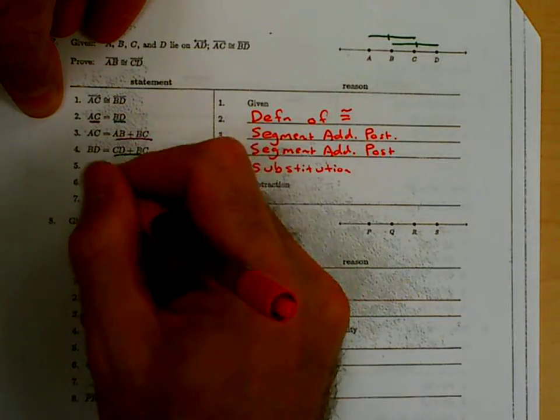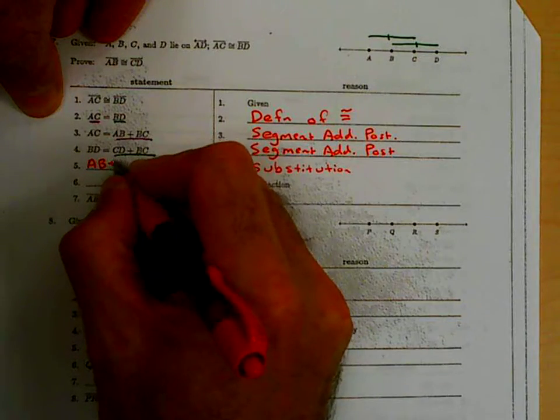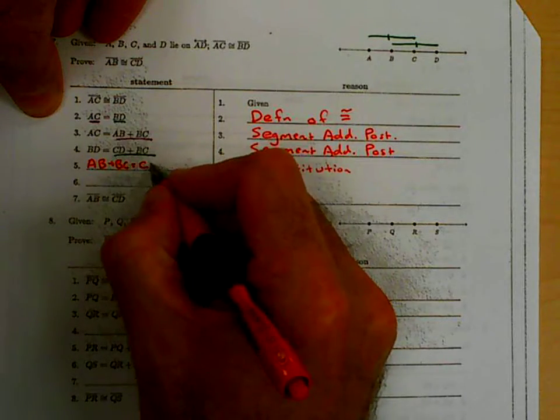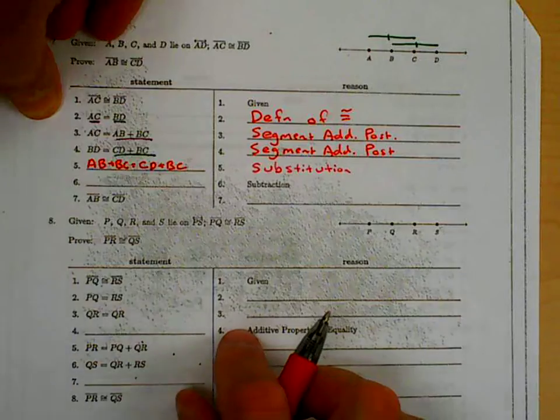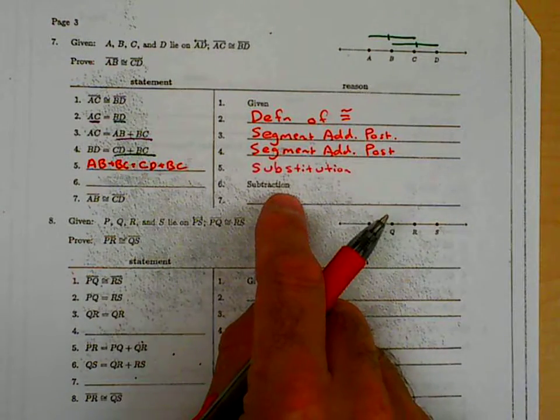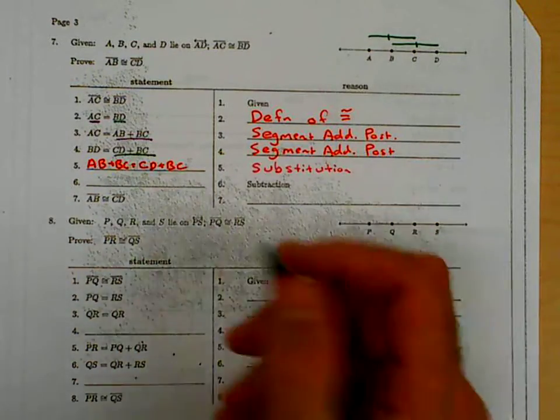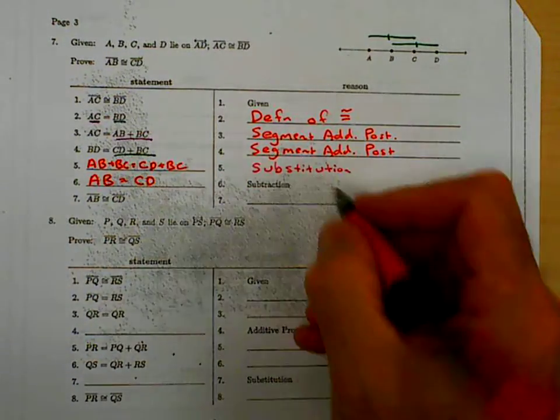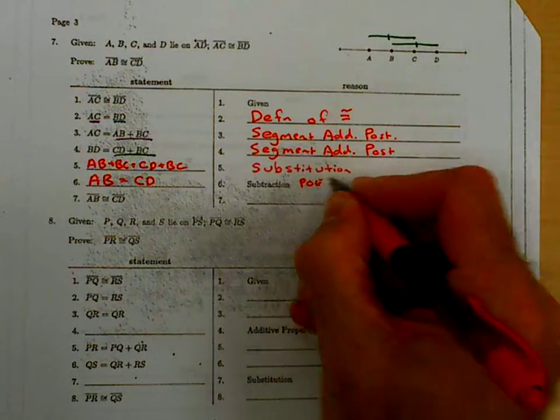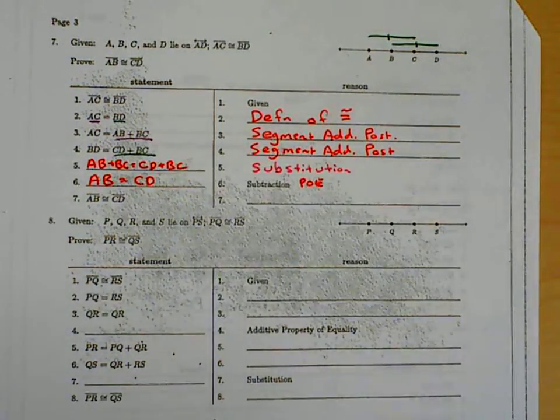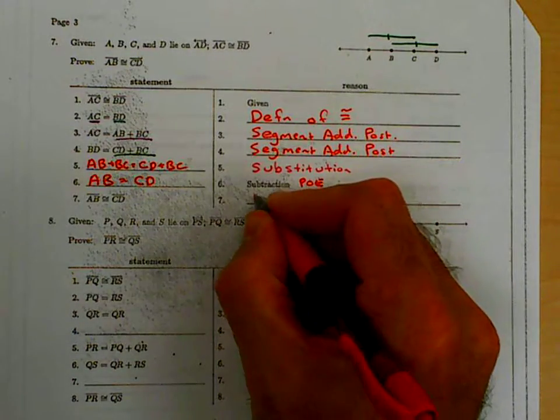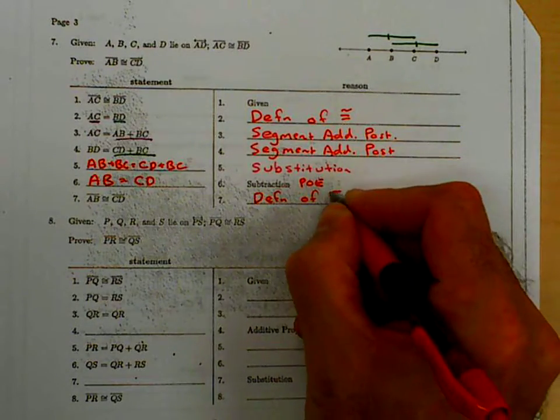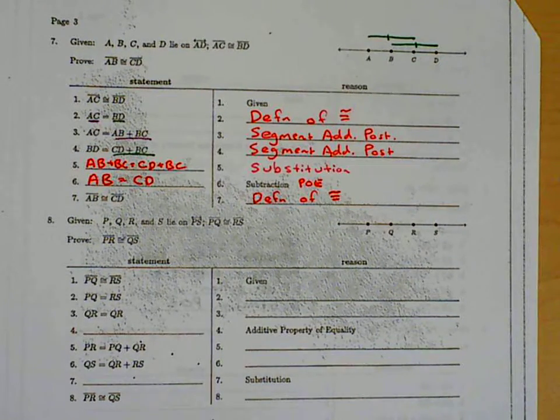I have AB plus BC equal that BD piece, which is CD plus BC. That's substitution. And once I have that now, the next piece that I want to do is I want to subtract BC from both sides. I get AB equals CD by subtraction property of equality. And once I have that, then by definition of congruency, I'm done. We go back to segments being congruent, by definition of congruency. And that's number seven.